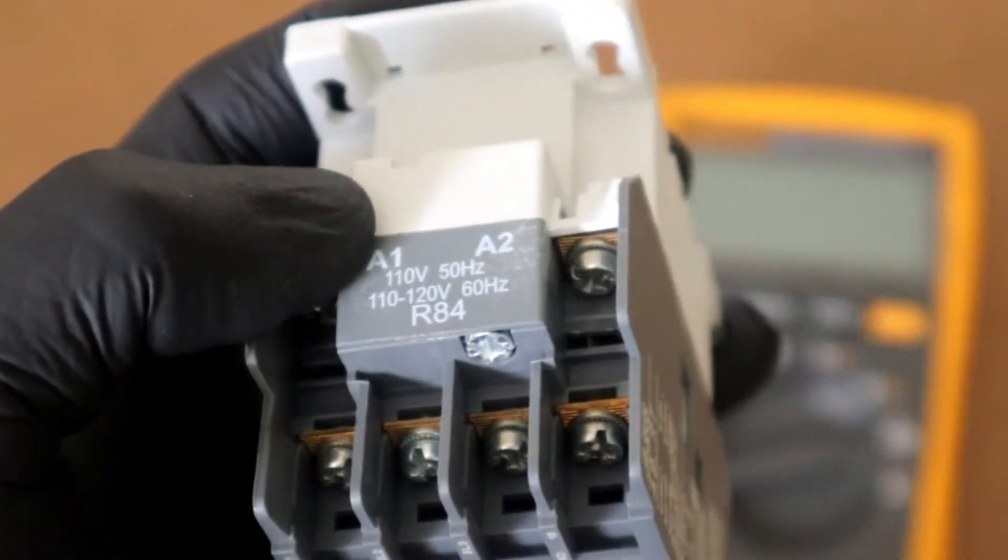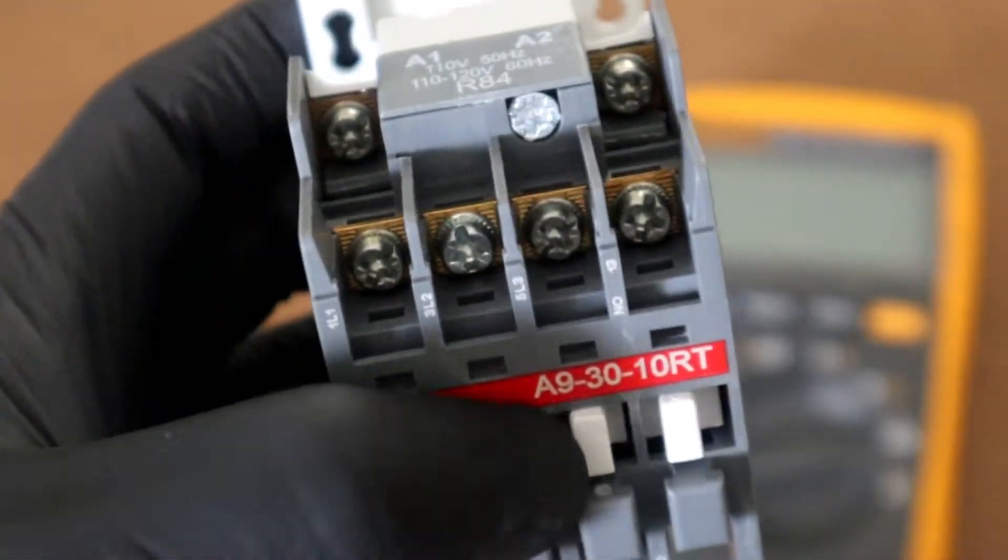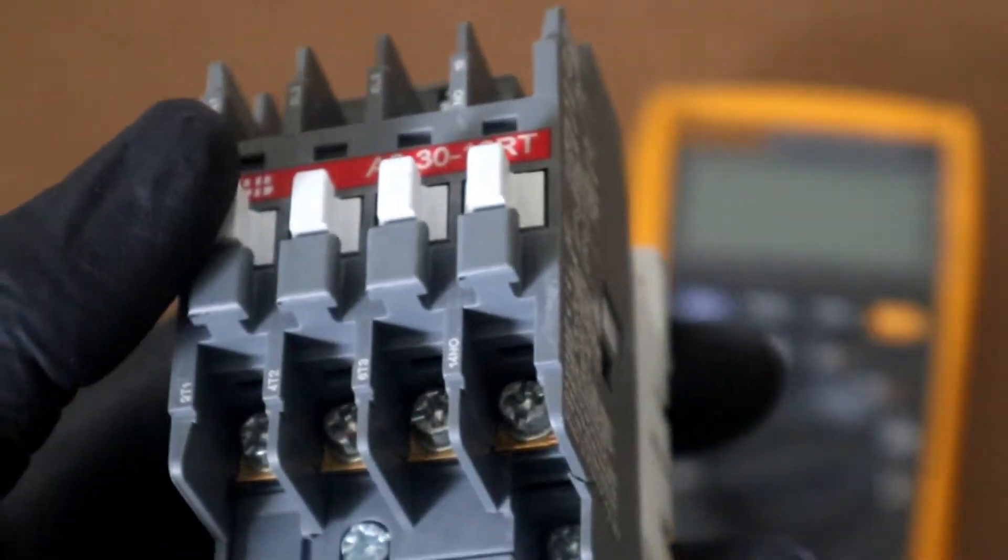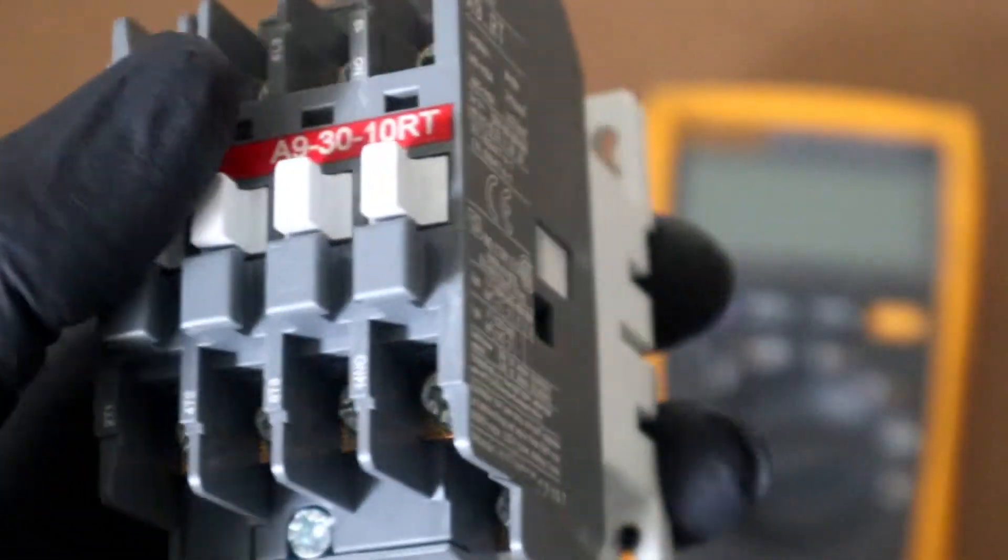As you see here we have our coil A1, A2 which is used to control the switching on and off of our contactor. The design of the contactor enables it to be opened and closed repeatedly with minimal damage on the high current contacts.